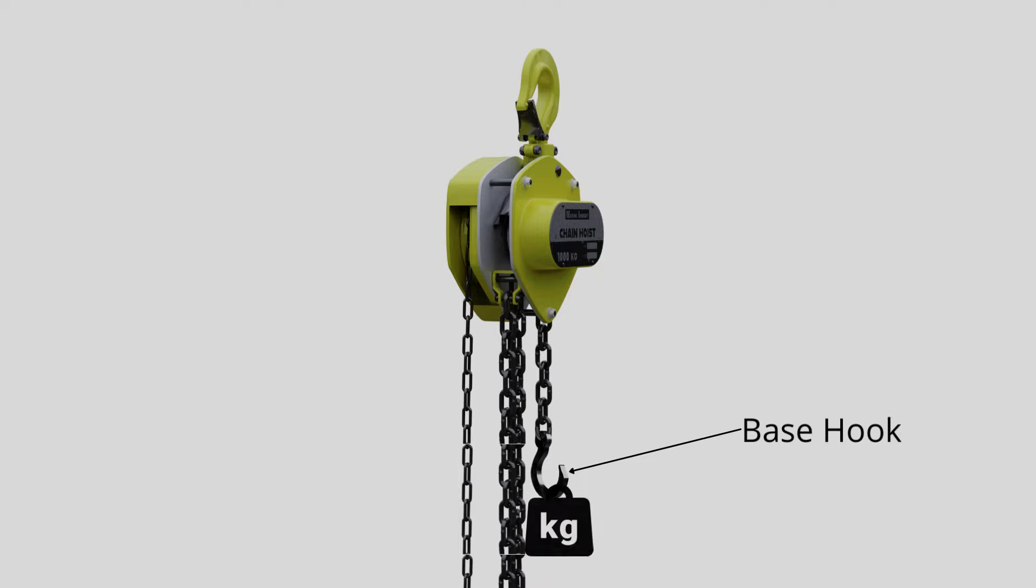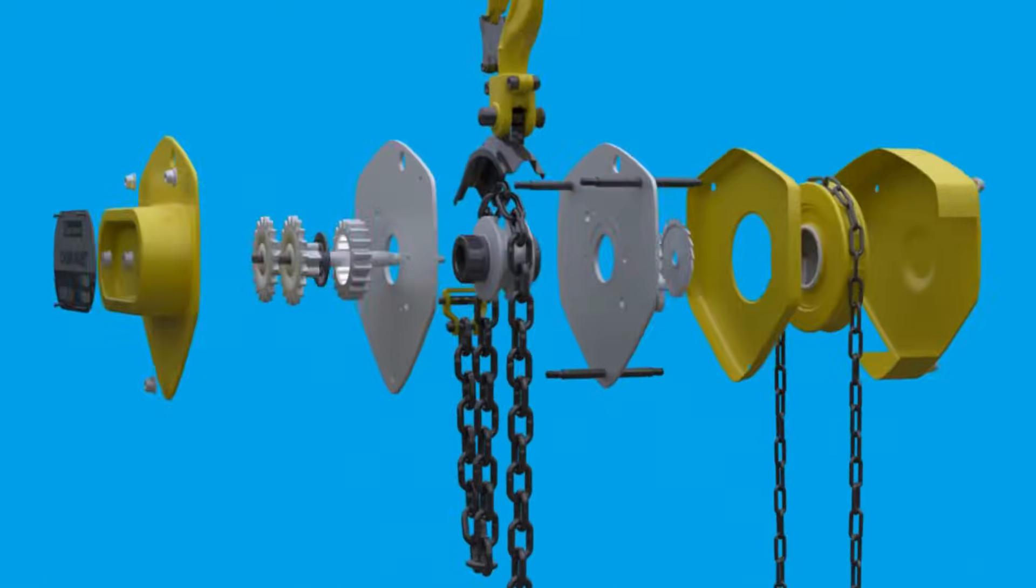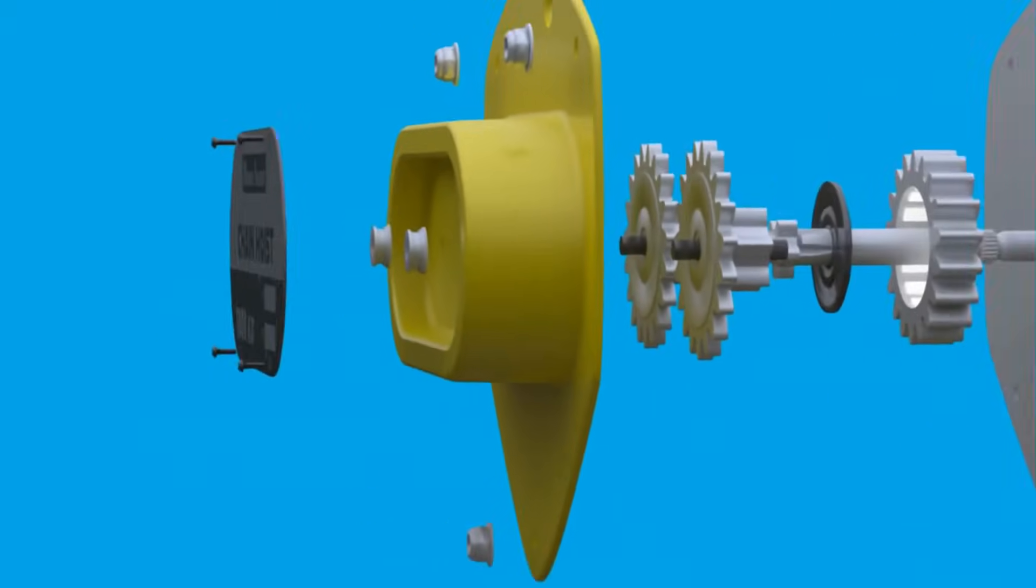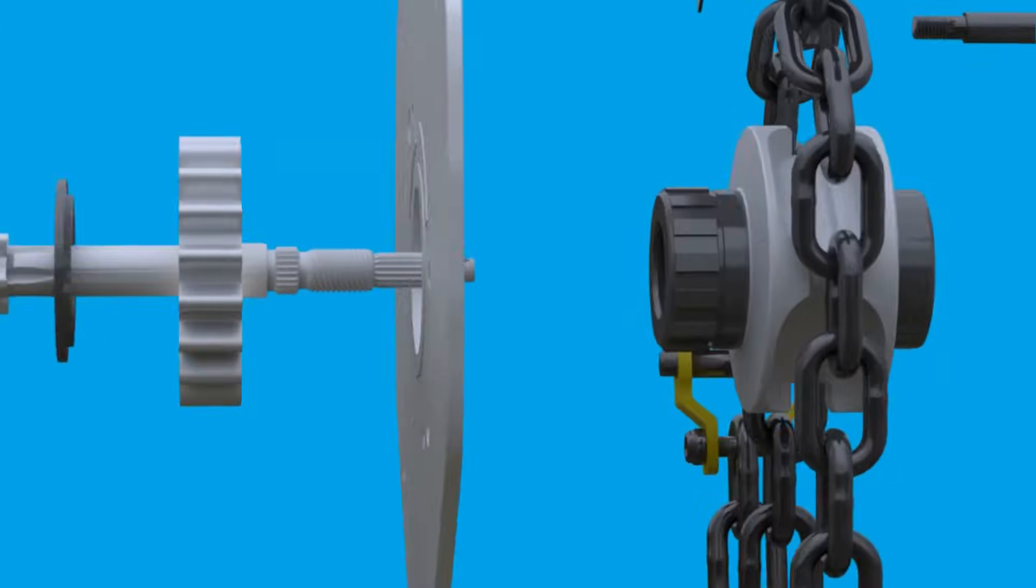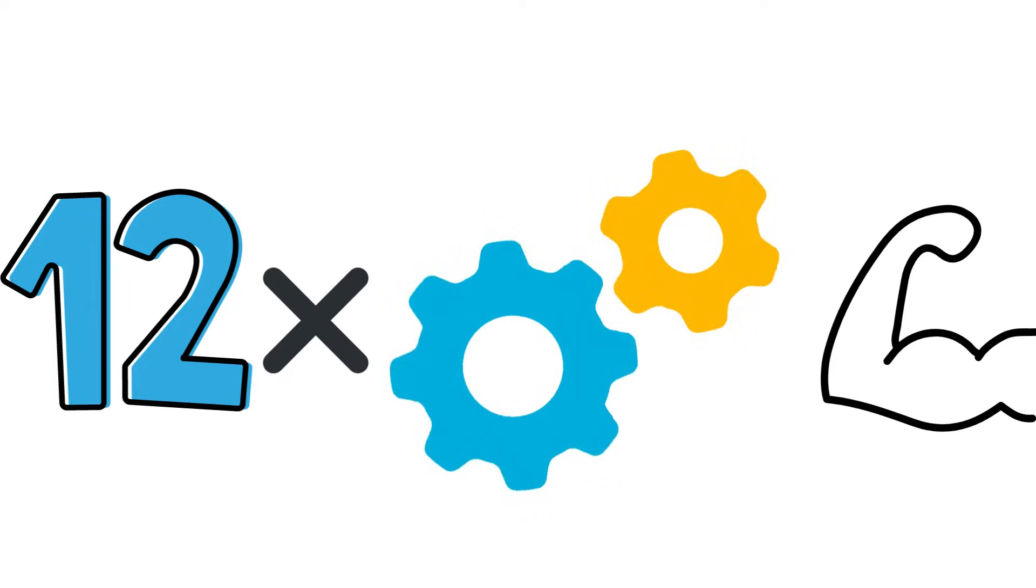The chain block is connected to the load via the base hook. Lifting a heavy load is possible by using multiple larger and smaller gears in the chain hoist mechanism, which increases the mechanical force by at least a dozen times.